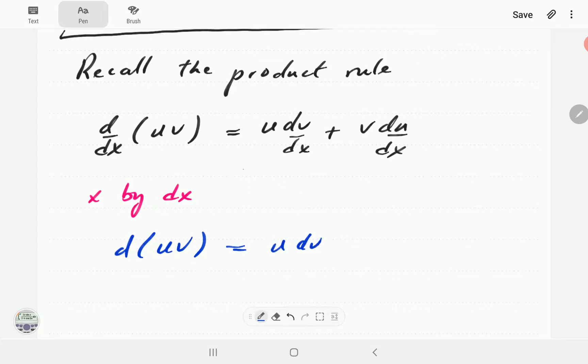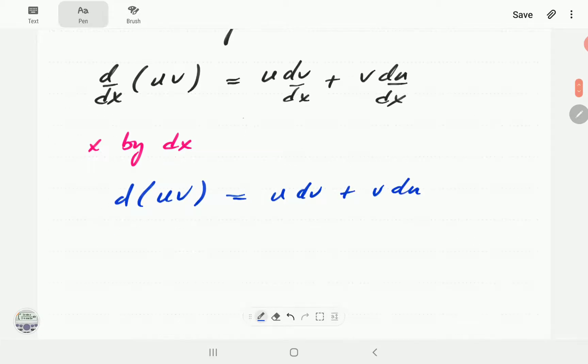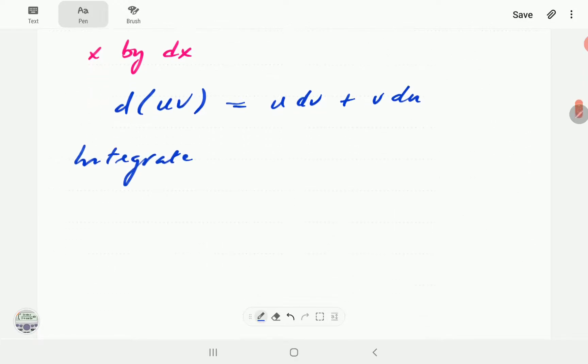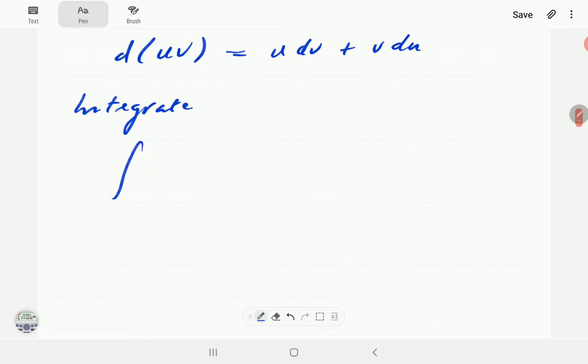Then what I'm going to do is we're going to integrate all these terms. So the left hand side we're going to have the integral of d(uv), on the right hand side the integral of u dv plus the integral of v du.